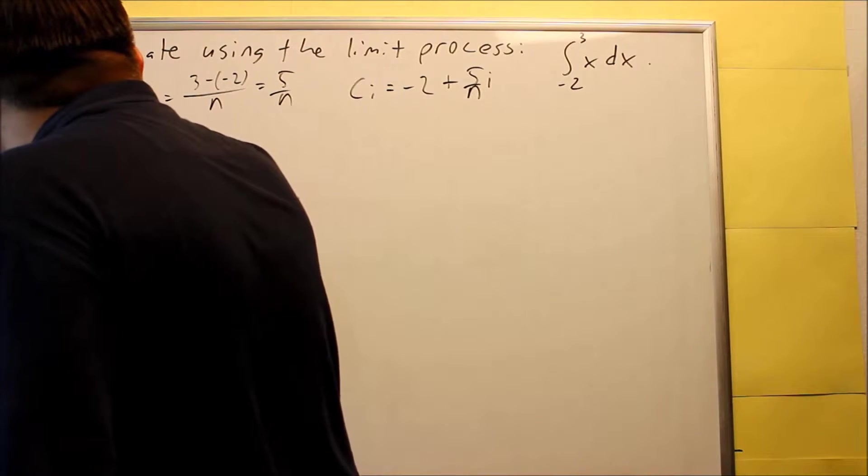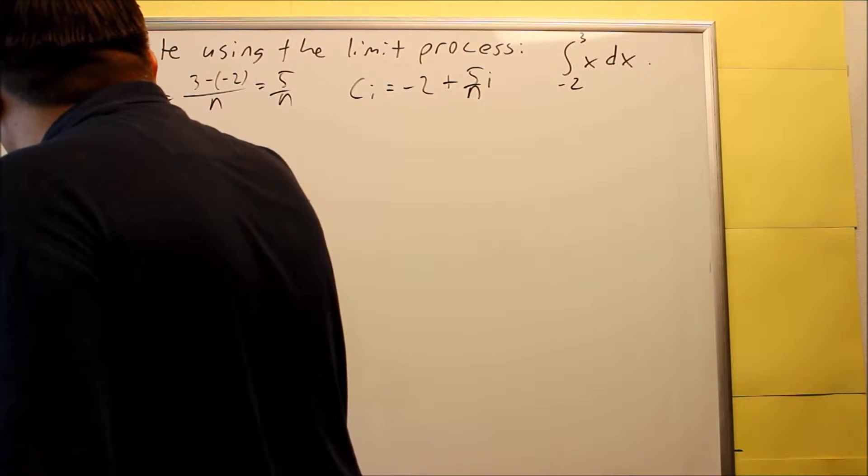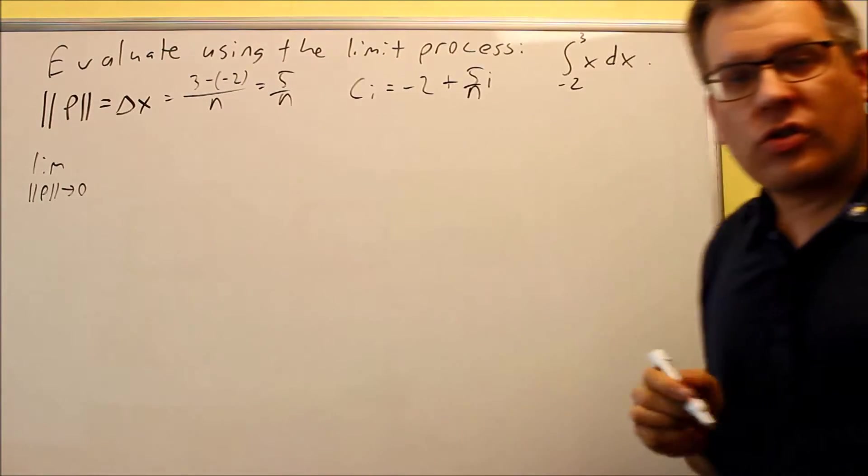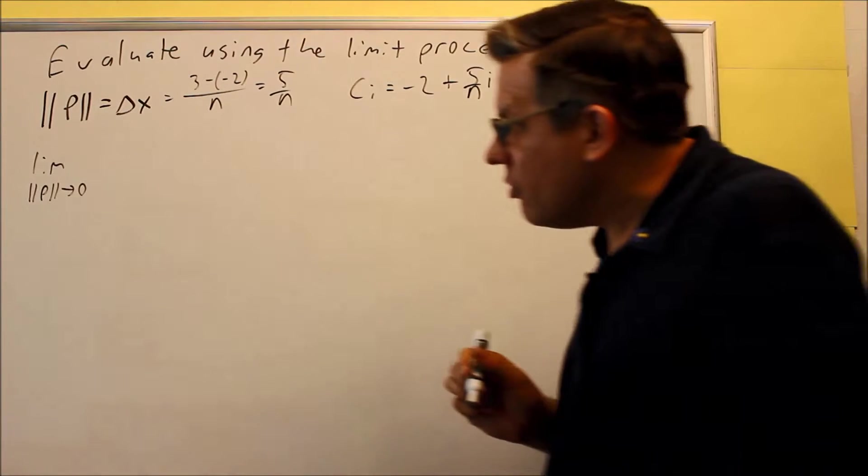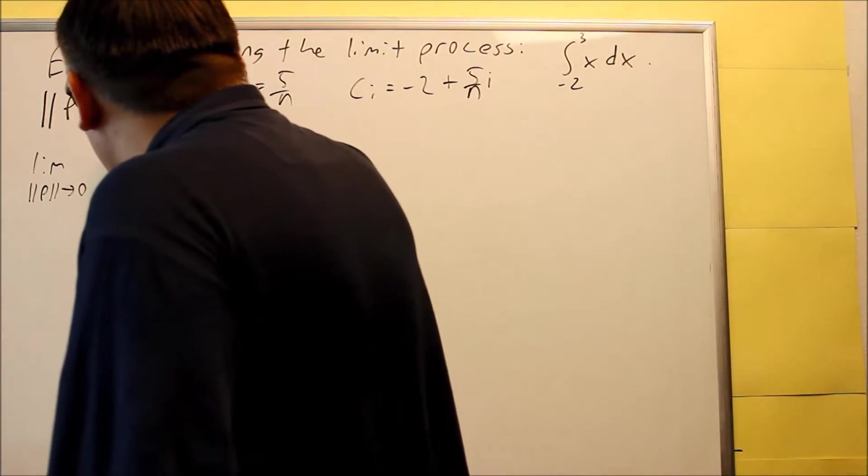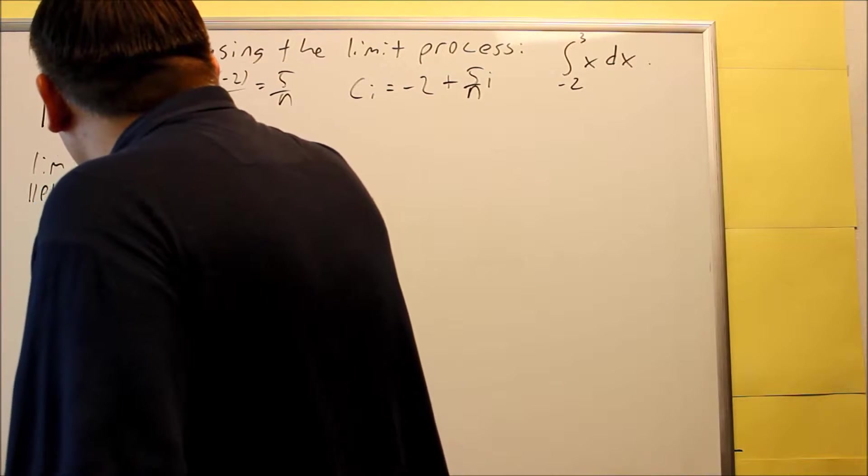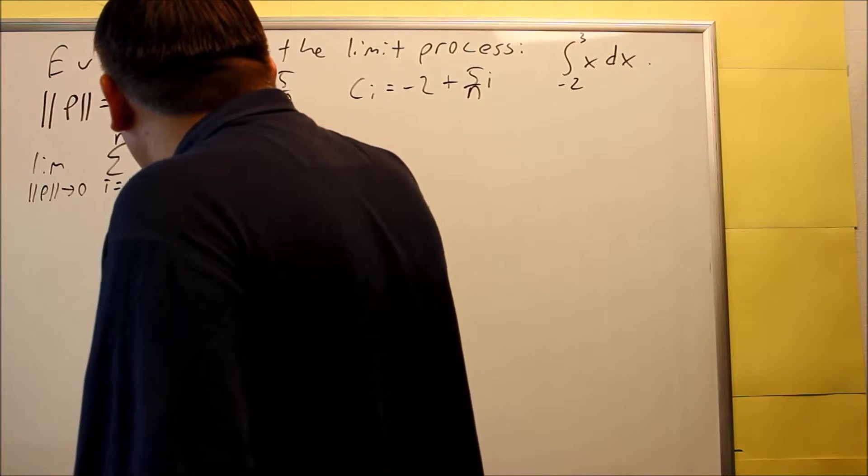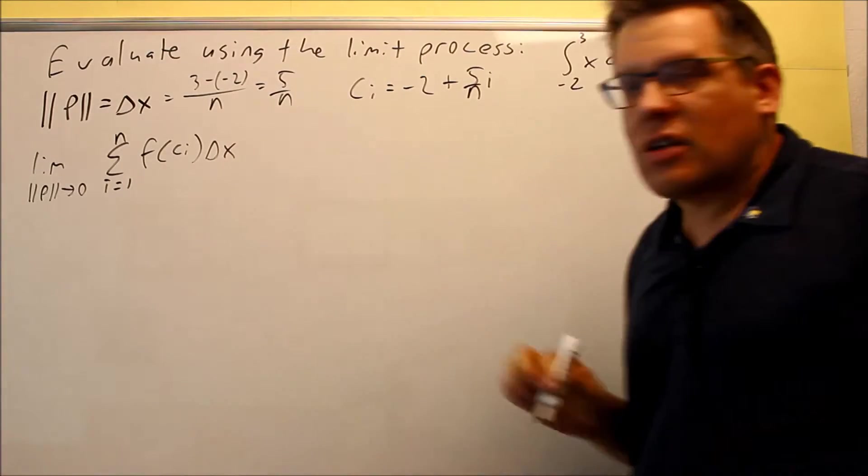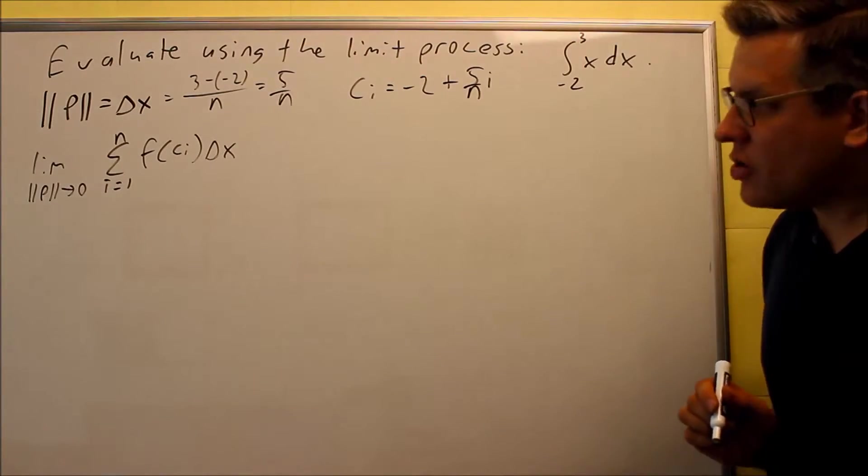Now, we are going to use the norm in this case. So, we're going to say that the norm has to go to 0, and this is how you'll see the explanations done in this section, because they've already introduced the norm to you. Norm goes to 0 of, we have summation, i equals 1 to n, f of ci times delta x.